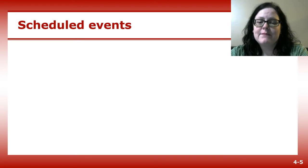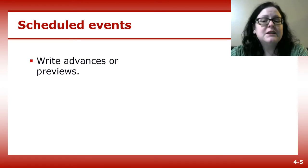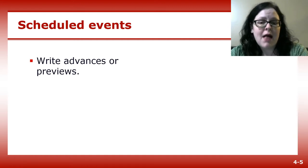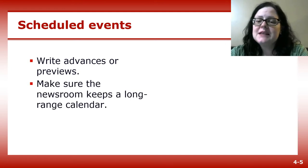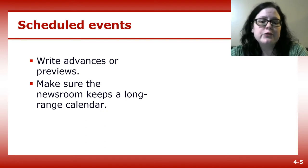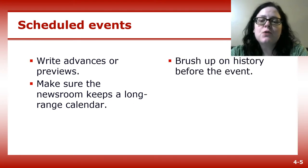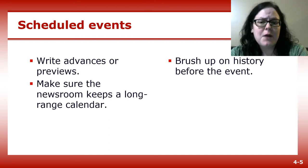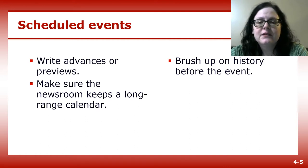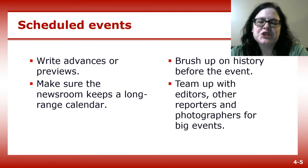The next news idea category is scheduled events. Stories about scheduled events can be advances or previews of the event, telling your readers what will happen so they know if they'd like to attend. The best way to keep track of scheduled events is for your newsroom to keep a long-range calendar — a physical calendar or a Google calendar that aggregates calendars from your campus, city, and other organizations. When writing a story about a scheduled event, take the time to learn the history of the event. For big events like an election or the state fair, team up with photographers and other reporters to cover multiple angles.